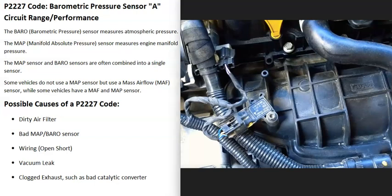There could be a manifold absolute pressure (MAP) sensor measuring the pressure inside the manifold, a mass airflow (MAF) sensor measuring all the air going into the engine, and a barometric pressure sensor. For example, if you're driving at sea level and then drive up a mountain, the elevation and pressure change, and the barometric pressure sensor picks that up.